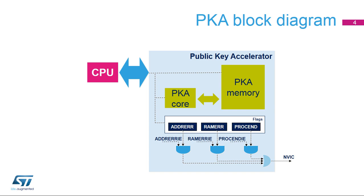The public key accelerator lightens the STM32WB CPU's workload by performing key operations in the PKA core using dedicated PKA memory. The CPU loads initial data into the PKA internal RAM, which is located at address offset 0x400. Then, in the PKA control register, the CPU specifies the operation which is to be executed and finally asserts the start bit.